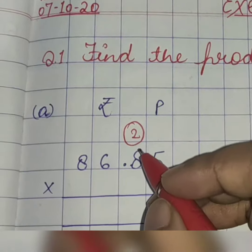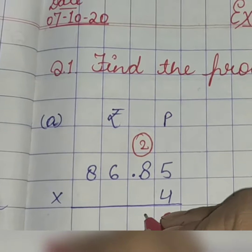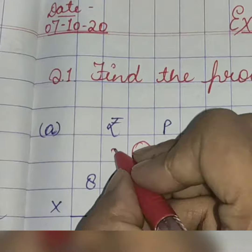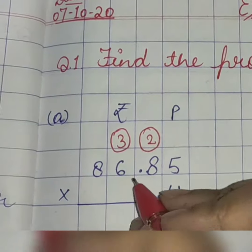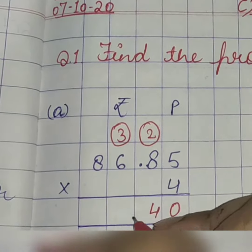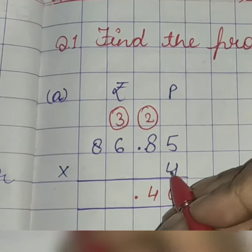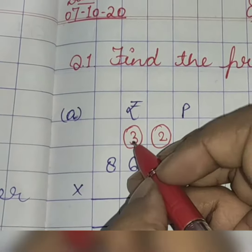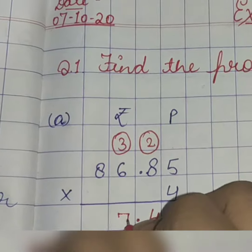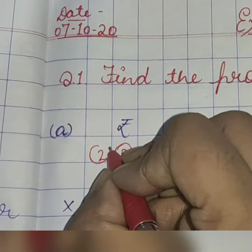4, 8's are 32. 32 plus 2, 34. 4 here and 3 as a carryover. Then, don't forget to write this dot over here. 4, 6's are 24. 24 plus 3, 27. 7 here, 2 as a carryover.